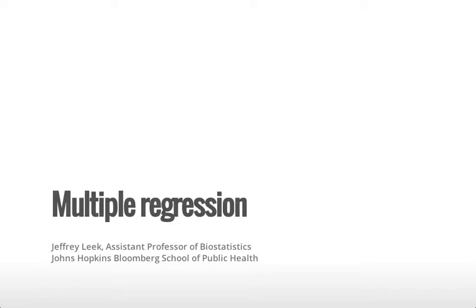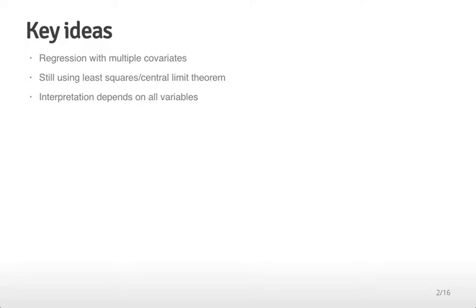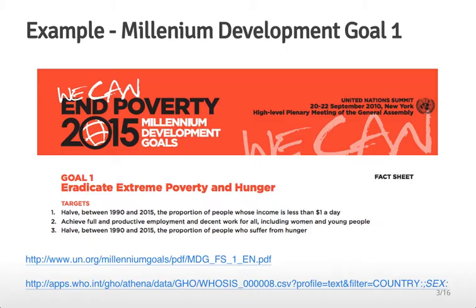In the previous lectures we've talked about regression examples where you have a quantitative outcome and one covariate of interest, whether that's a factor variable or a continuous variable. In this lecture we're going to talk about multiple regression, which focuses on using multiple covariates in your model. We'll still use the same least squares approach for fitting the model and the central limit theorem for inference, and we'll pay careful attention to how we interpret the coefficients, particularly when you have interaction terms.